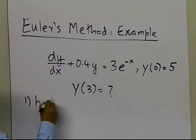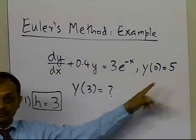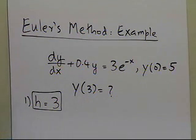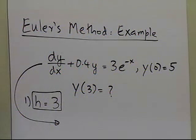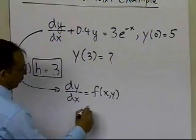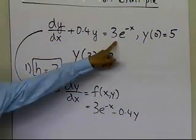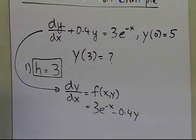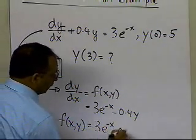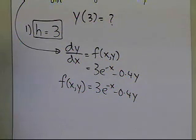In the first case, choose h equal to 3, which means the step size is h equal to 3. That means I'll be taking one step, because I'm at 0 and the value is given as 5, so when I choose h equal to 3, I'll be directly able to get the value of y at x equal to 3. The first step when looking at a differential equation is to rewrite it so that dy/dx equals f(x, y), which in this case is 3e to the power minus x minus 0.4y. That is your function f(x, y), which represents the slope. If I know values of x and y, I can calculate the slope of the dependent variable with respect to the independent variable x.